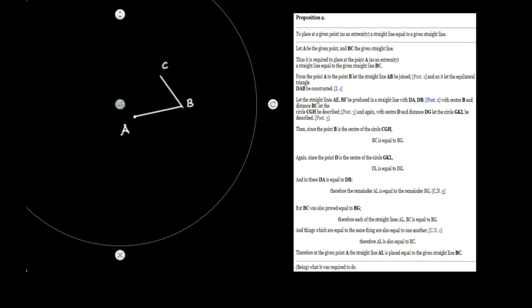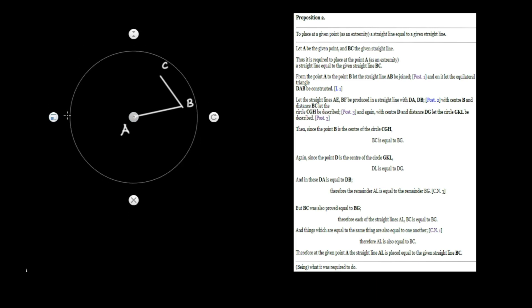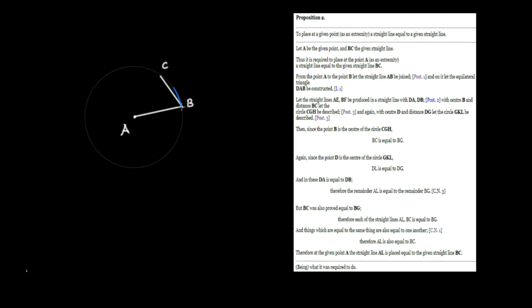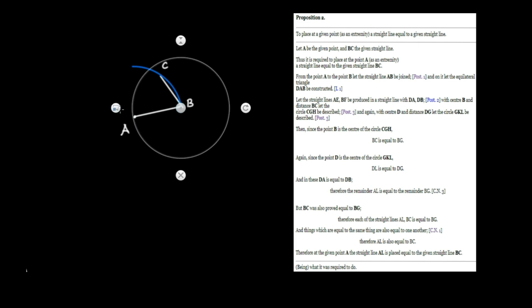We'll use A as a center and AB as the radius, and to find the equilateral triangle we draw some arcs — no need to draw the entire circle. We just need to find where those two arcs intersect, and we're going to call this intersection D. We've proved that when we complete the lines — D over to A and D over to B — that's guaranteed to be an equilateral triangle.